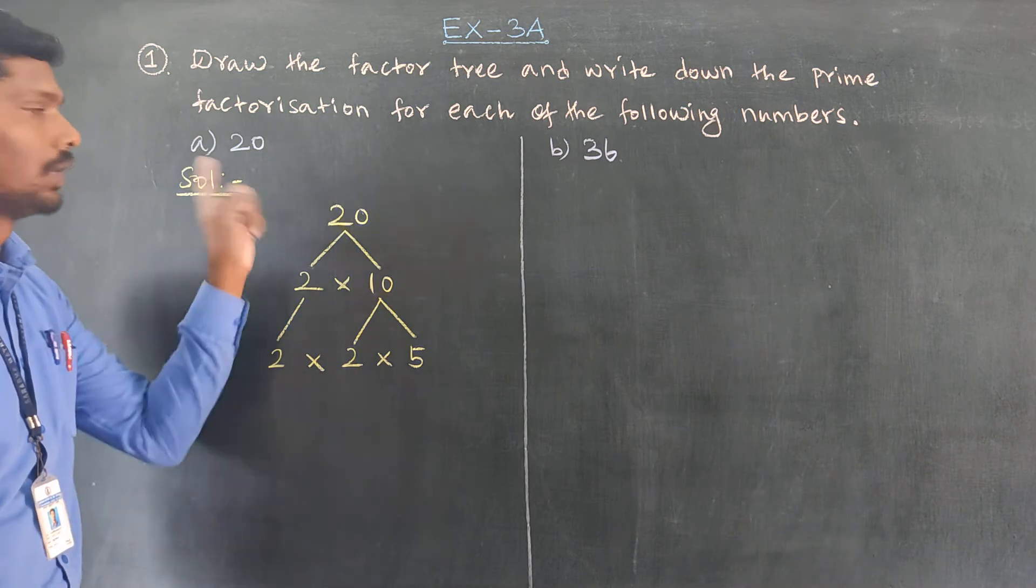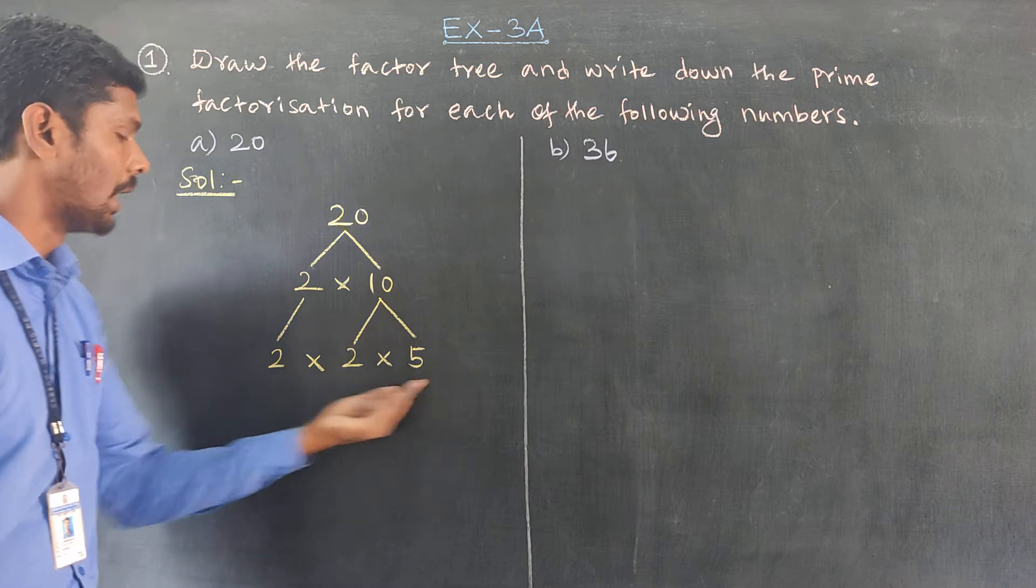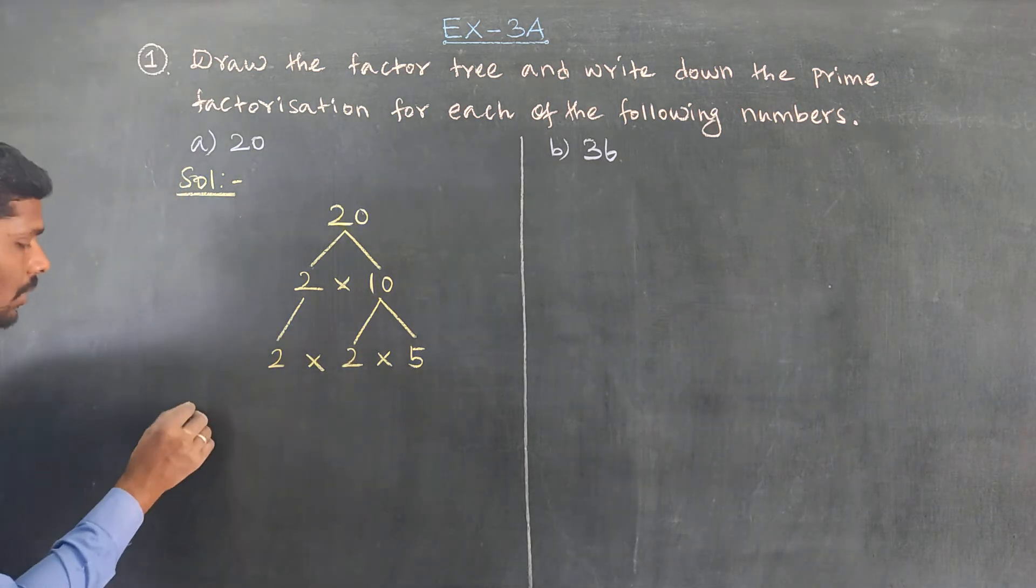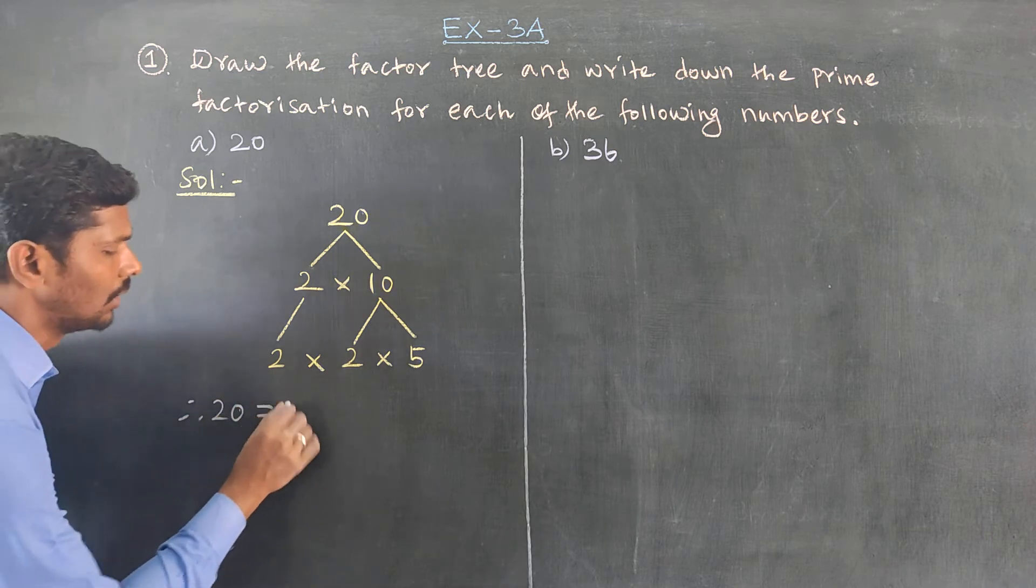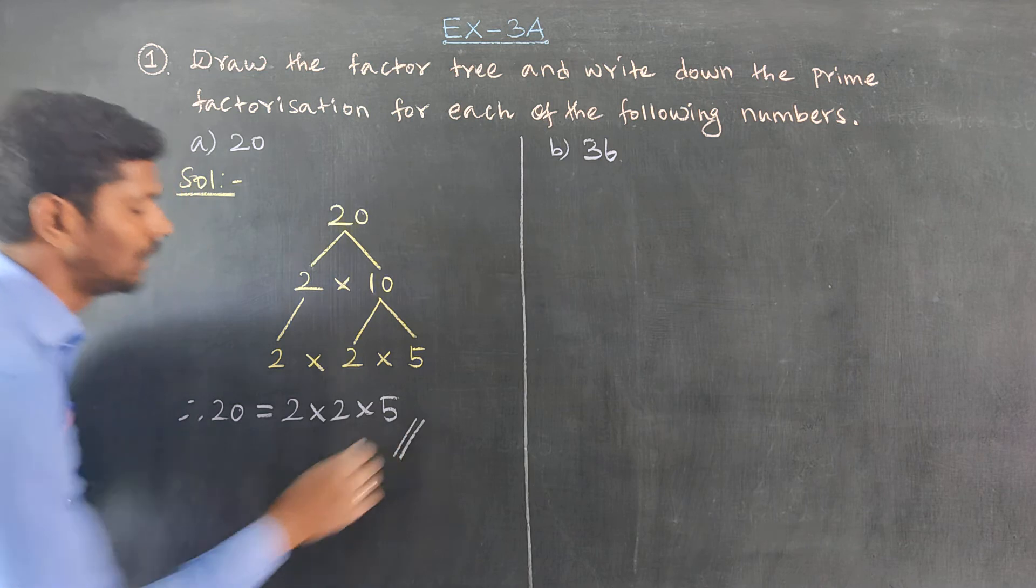2 times 5. Both 2 and 5 are prime numbers, so this is the prime factorization. Therefore, 20 equals 2 times 2 times 5.